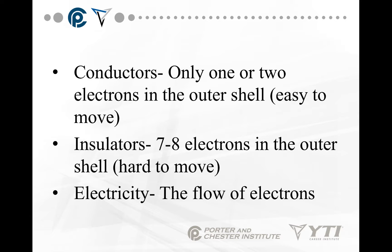Insulators have seven to eight electrons in the outer shell and prevent electrons from moving. Things like rubber, plastic, glass, and dry wood are all things where electrons are harder to move.